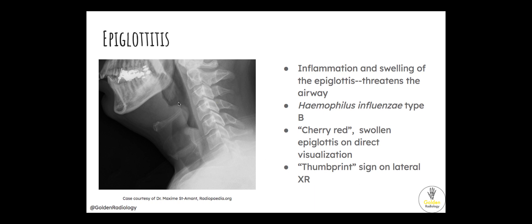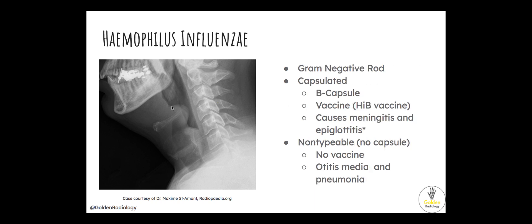The classic radiographic appearance is a thumbprint sign on the lateral radiograph. Haemophilus influenzae is a gram-negative rod that comes in two types: capsulated (typable) H. flu and non-encapsulated (non-typable) H. flu. Of the capsulated types, only the B capsule matters in medicine — we have the Hib vaccine for it. The encapsulated form causes meningitis and epiglottitis. The non-typable strain has no vaccine and causes otitis media and pneumonia.